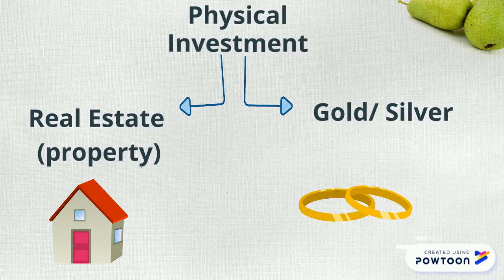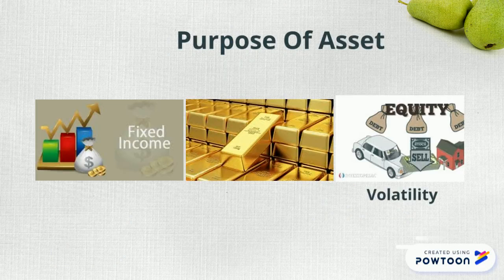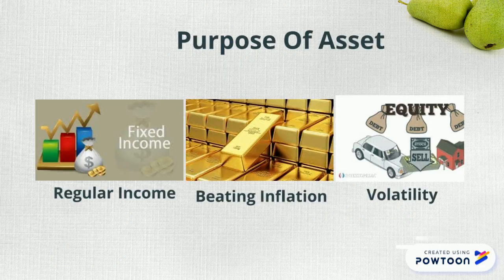How do these asset classes help in managing our money? These asset classes serve different purposes. For example, equities are volatile. Fixed income gives us regular cash flow. Gold is a good hedge against inflation. Hence, an appropriate allocation should be created by investing a certain percentage of wealth in each of these asset classes.